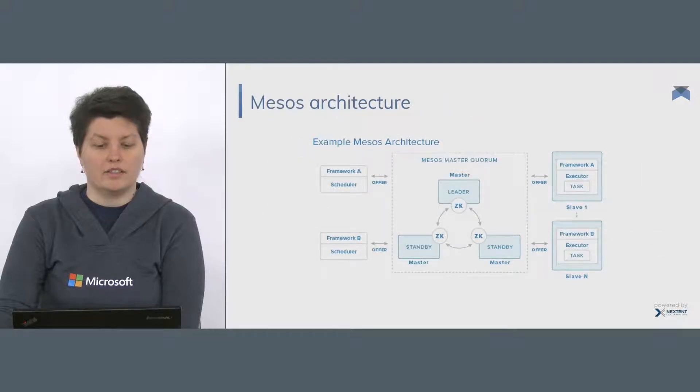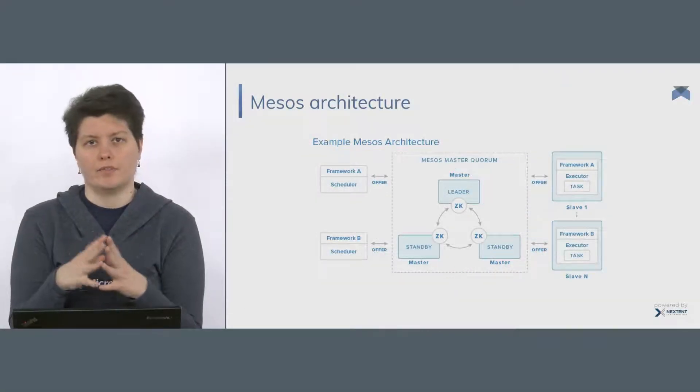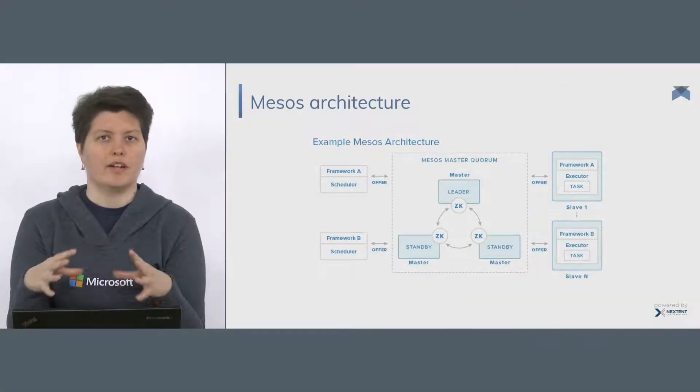Let's have a look at its architecture. As you can see, it is highly available and fault tolerant. It uses three masters and there is also a quorum from the three masters — one is the master and the other ones are standby, and they use the quorum to vote which is the master. We also have our nodes where many processes can run, including Docker, which Mesos can handle. The masters are connected via ZooKeeper.